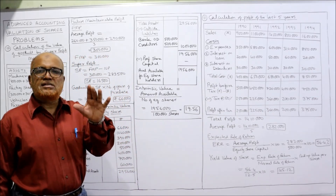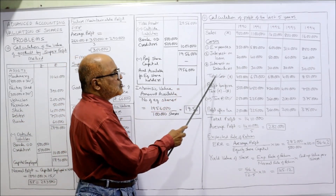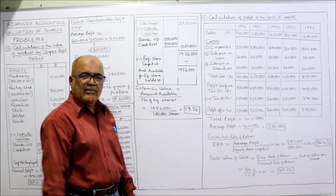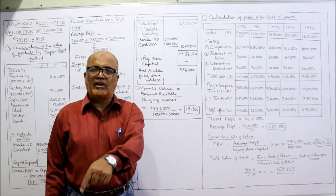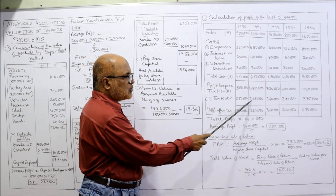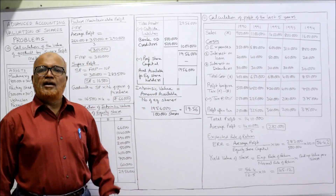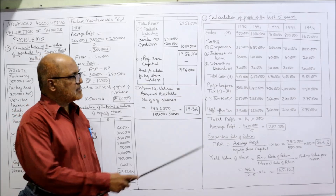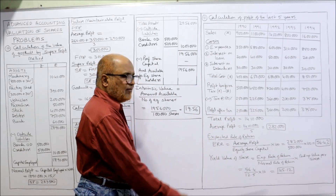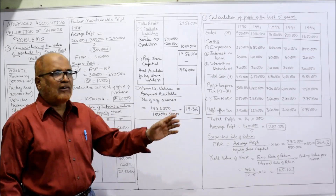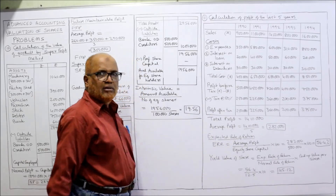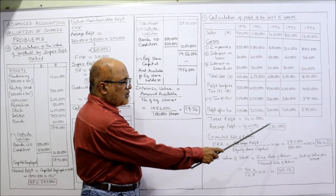From profit before tax, deduct tax at 50% as given in the problem. For example, 50% of 5 lakh = 2 lakh 50 thousand; 50% of 4 lakh 50 thousand = 2 lakh 25 thousand, and so on for each year. After deducting tax, we get profit after tax for all five years. Total of the five years' profits = 14 lakh 10 thousand. Average profit = 14,10,000 ÷ 5 = ₹2,82,000.